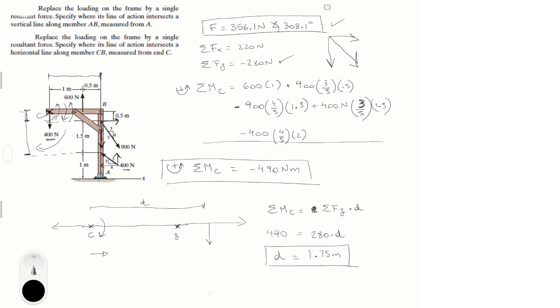So the final answer for the second part: the resultant force intersects the horizontal line through C at 1.75 meters from point C.